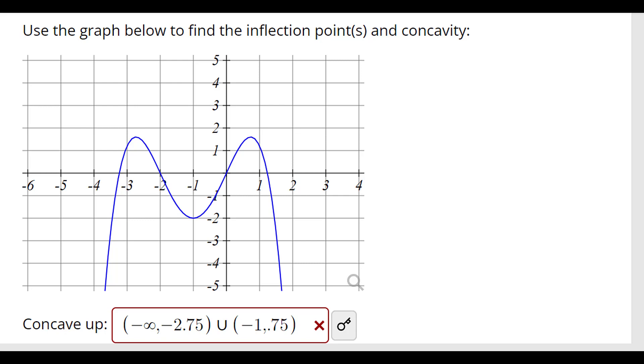This is number 7 from derivative and the shape of the graph. There's no formula given, so we have to go off what the shape looks like. The first part is to use the graph to find the inflection points and concavity.